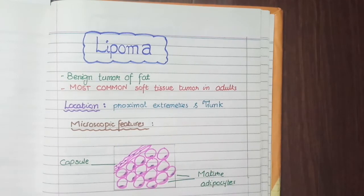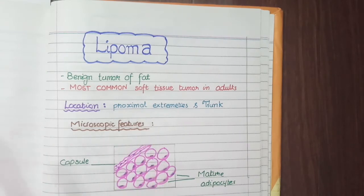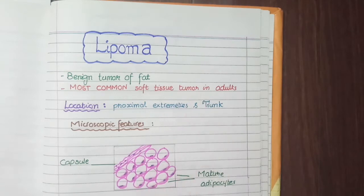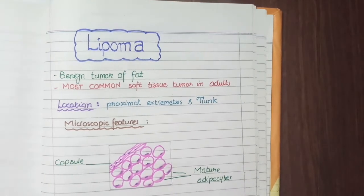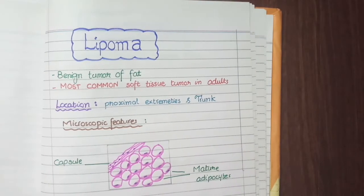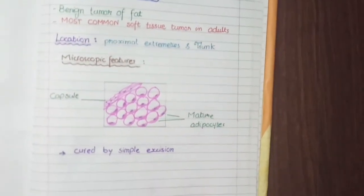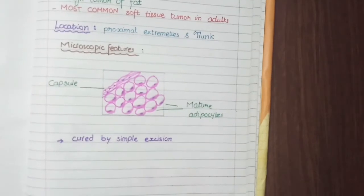Lipomas develop subcutaneously at the level of proximal extremities, i.e. upper arms and thighs, and in the trunk, i.e. abdomen and thorax. So lipomas are benign tumors of fat that arise in subcutaneous areas of proximal extremities and trunk.